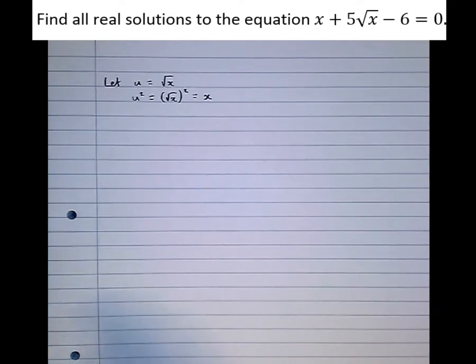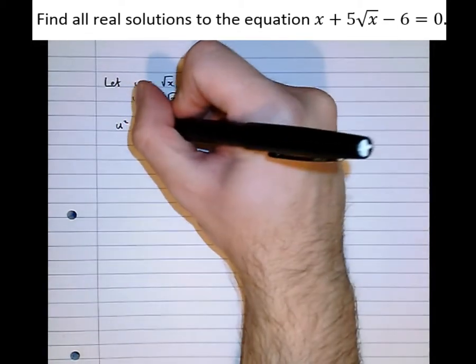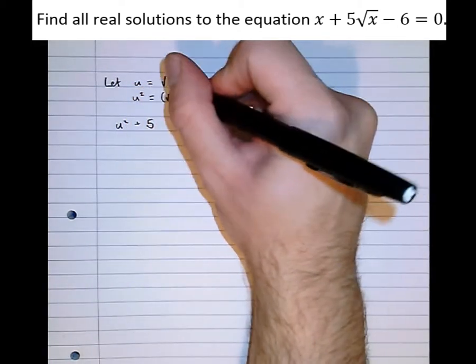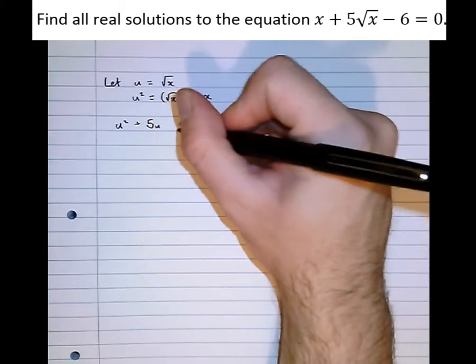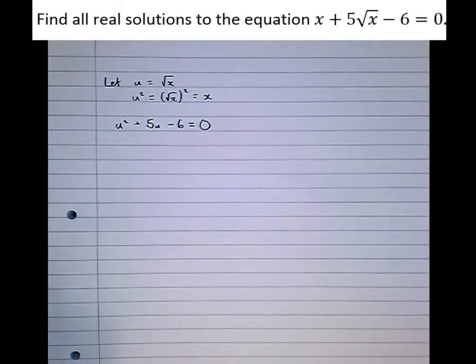Rewriting the quadratic now, we get u squared, x is u squared, plus 5 root x which is u, minus 6 equals 0. And now with that substitution we've unlocked the quadratic, we've made it visible.